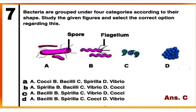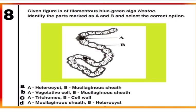Question 7: Bacteria are grouped under four categories according to their shape. Study the given figures and select the correct option. In figure A, bacteria are rod-shaped called bacilli; in B, spiral-shaped called spirilla; in C, comma-shaped called vibrio; and in D, round in shape called cocci. Correct option is C. Mark C.